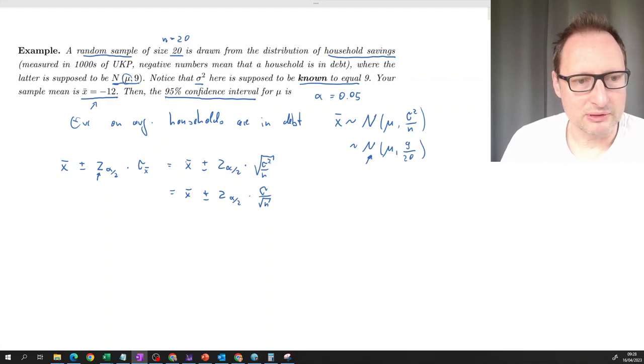So in our particular example, that will be X bar is going to be negative 12 on average household side in debt plus minus that value z alpha half that cuts off two and a half percent in each tail. So that's going to be 1.96. That's a value which you learn by heart after a while. That's close to two.